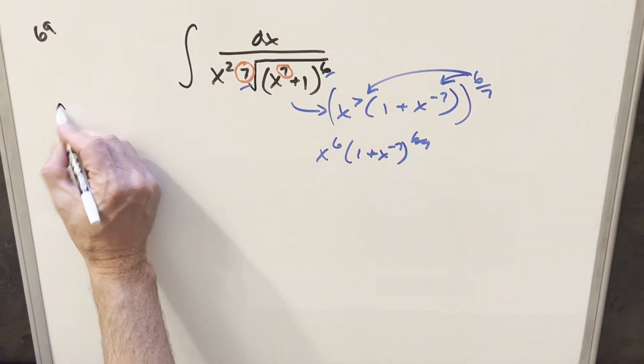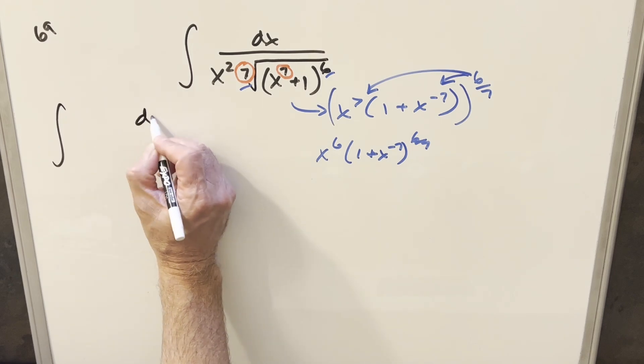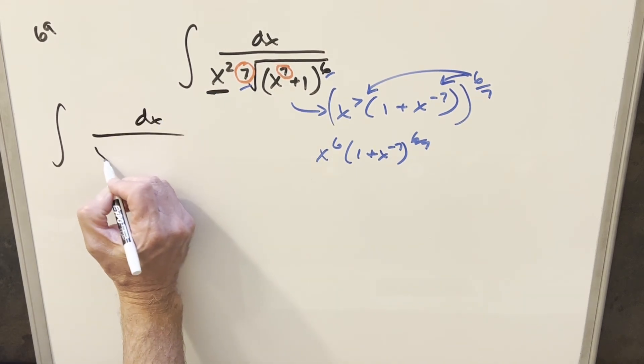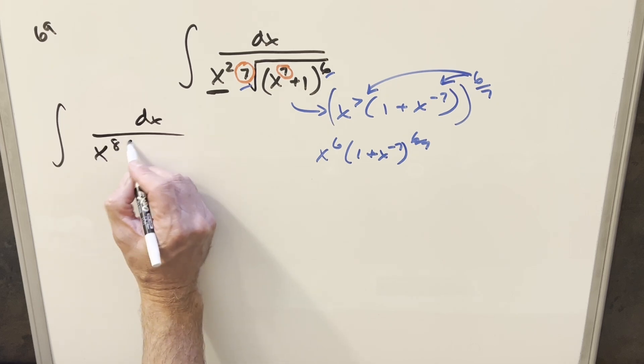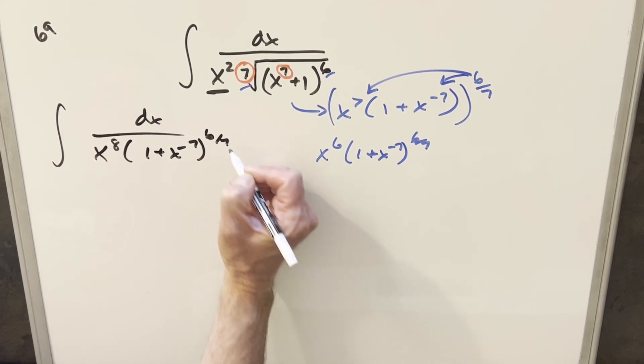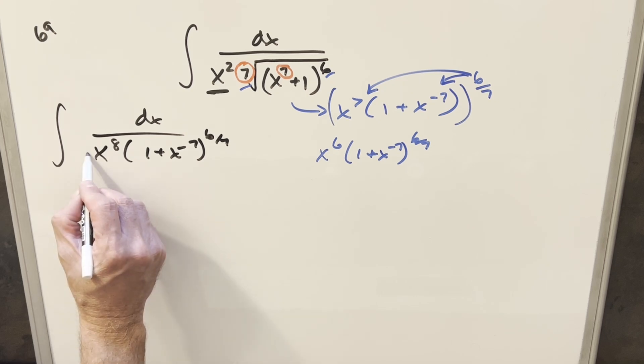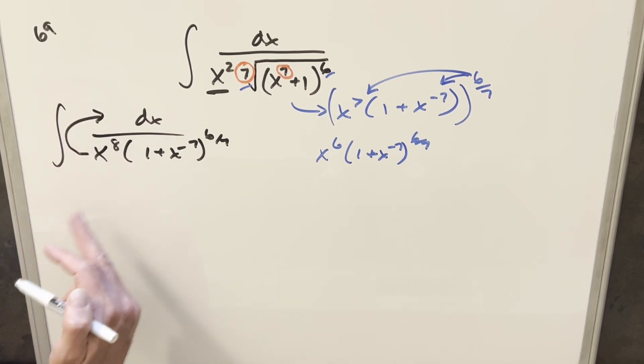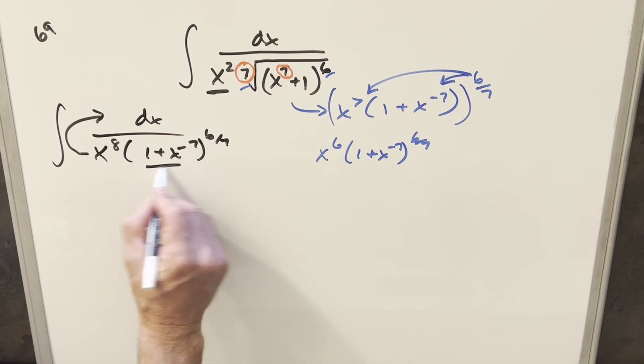So taking this mess and putting it back into the integral with the x squared we have here, if I multiply the x squared and the x to the 6th, now this becomes x to the 8th here, and we have this other stuff. But what I want to do after we have it in this form, let's take this x to the 8th and move it here into the numerator, because then I think we can do a u substitution with this piece right here.